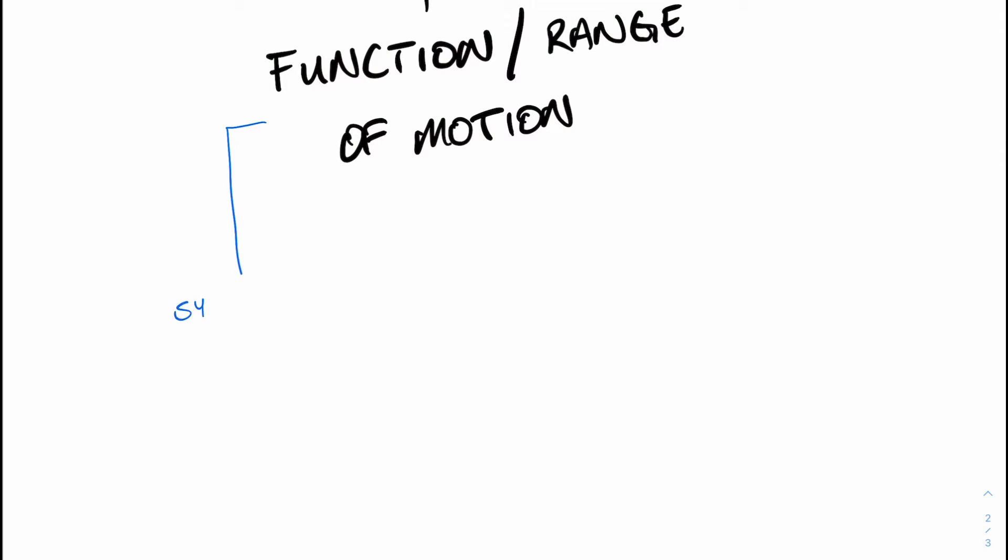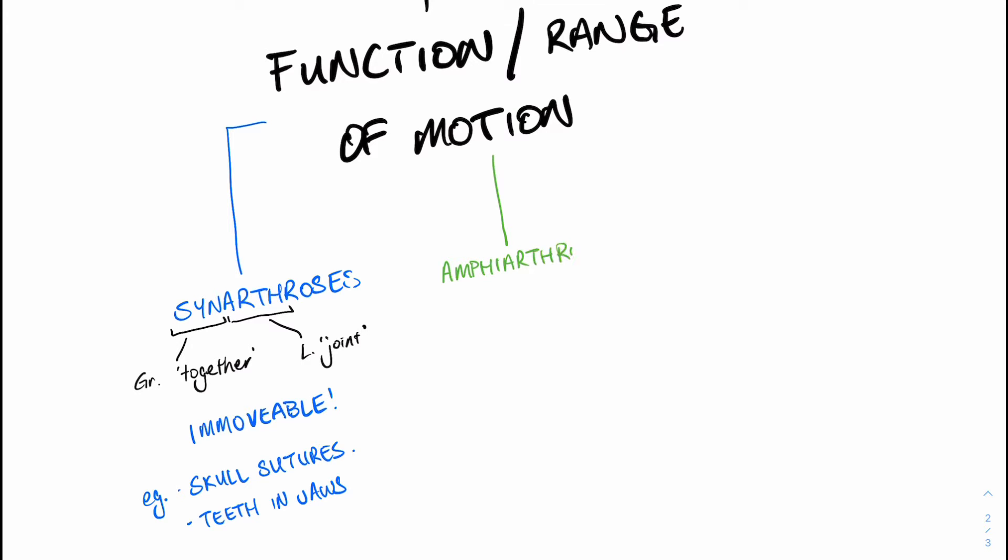Let's talk about the first type of classification, which is based on function. There are three main subcategories for this. The first of which is synarthroses. The prefix syn is Greek for together, and arth refers to joints. These types of joints are so together that it's immovable. For example, in the skull and the sutures that join the cranial bones, they're so together, they're practically one, so they're not going to allow very much, if any, range of motion. The other example are the teeth, which are embedded in the maxilla and the mandible. Skull sutures and teeth within the facial bones are examples of synarthrotic joints.